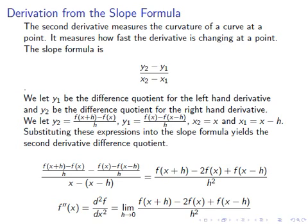The slope formula is (y2 minus y1) over (x2 minus x1). So if you let y2 equal the forwards difference quotient, f(x+h) minus f(x) over h, and let y1 equal the backwards difference quotient — the left-hand derivative difference quotient — f(x) minus f(x-h) over h, and you let x2 equal x and x1 equal x minus h, you can find the derivative of the derivative.